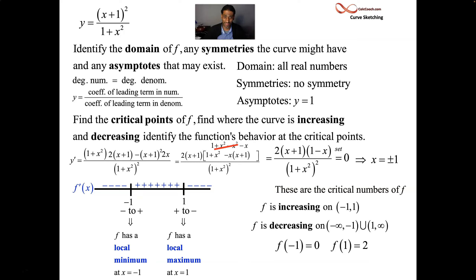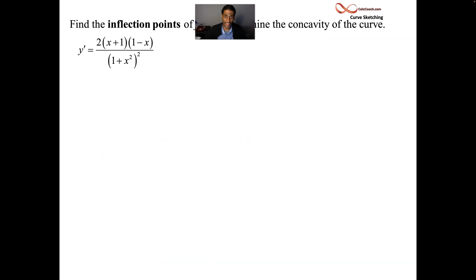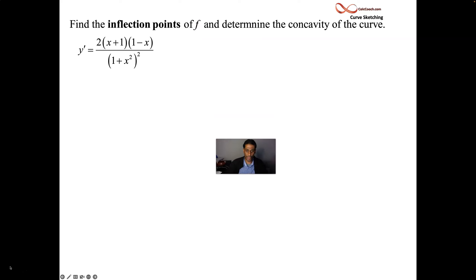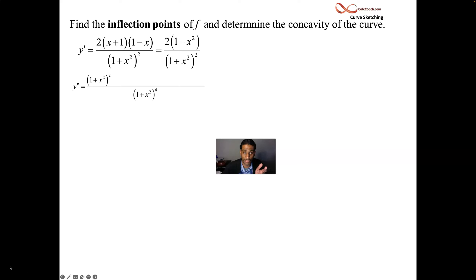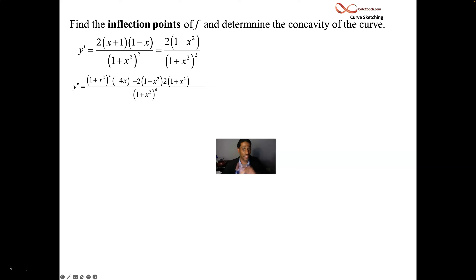Quotient rule again for the second derivative. This was our first derivative — multiply it out and you end up with a difference of squares, which works out nicely. Then take the second derivative: square the bottom, bring the bottom up to the top, take the derivative of the top. Keep the 2, focus on the inside to get negative 2x — that gives negative 4x. Put a minus sign, leave the top alone, multiply by the derivative of the denominator.